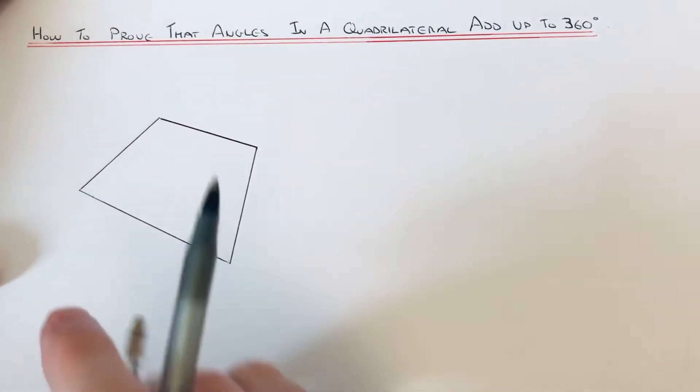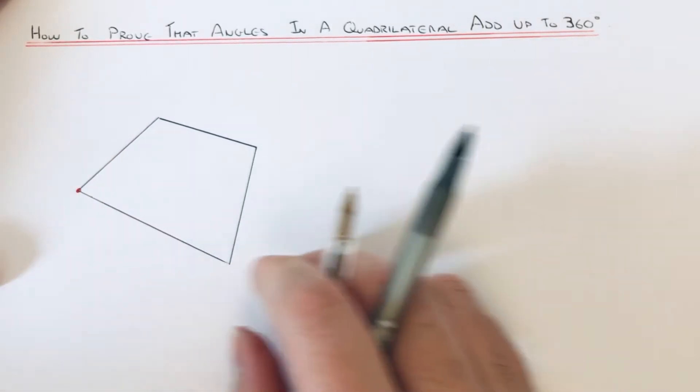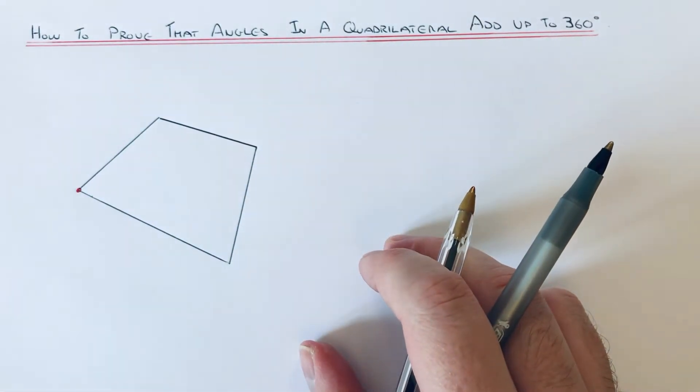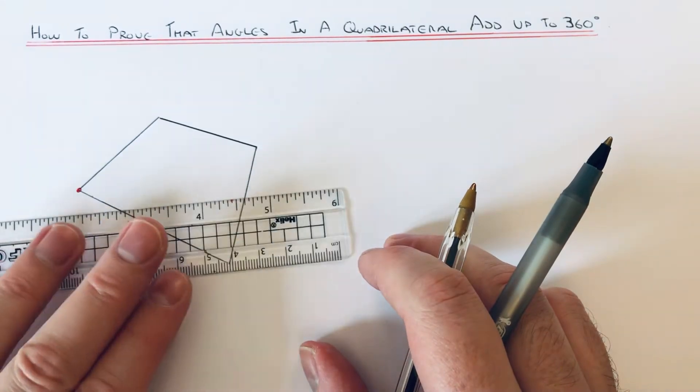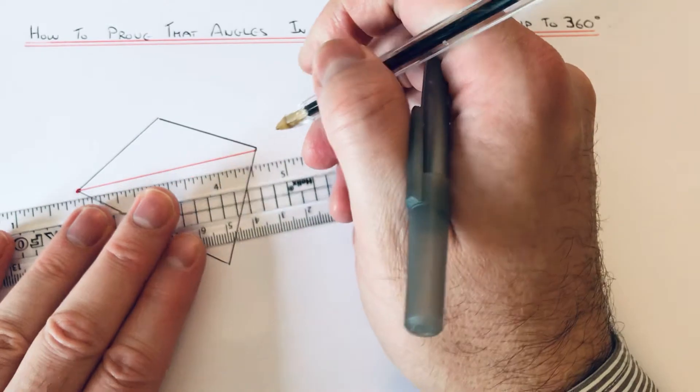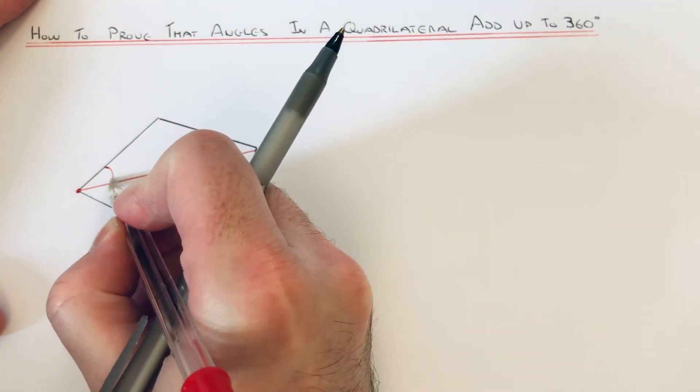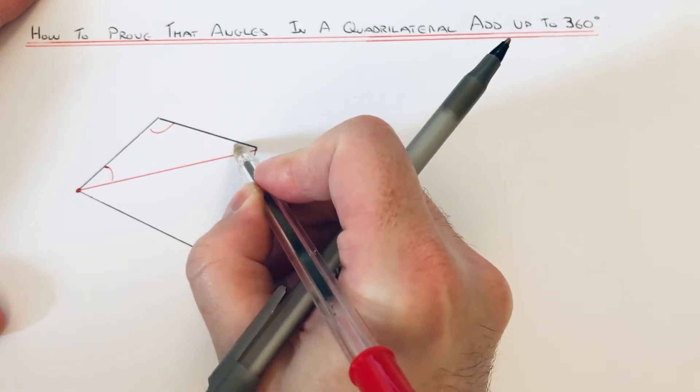The way you can do this is to pick a corner on your quadrilateral, and using that corner, divide the quadrilateral up into two triangles. You know that the angles in a triangle add up to 180.